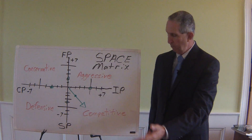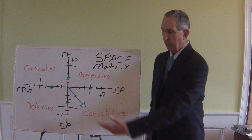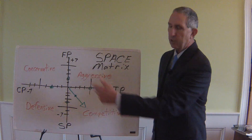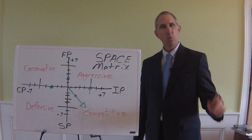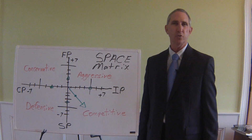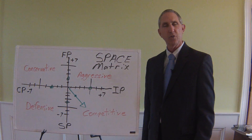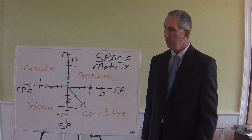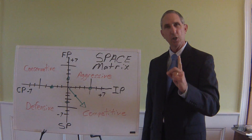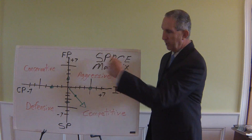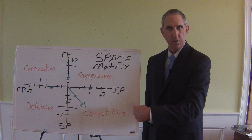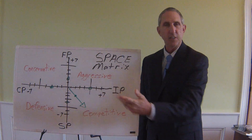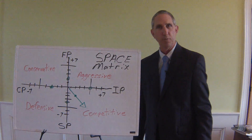The four axes are: financial position, industry position, stability position, and competitive position. Basically, what teams of students do when studying chapter six and preparing a strategic plan for their business is they rate their assigned company on these four dimensions — FP, IP, SP, and CP — on a one to seven scale.